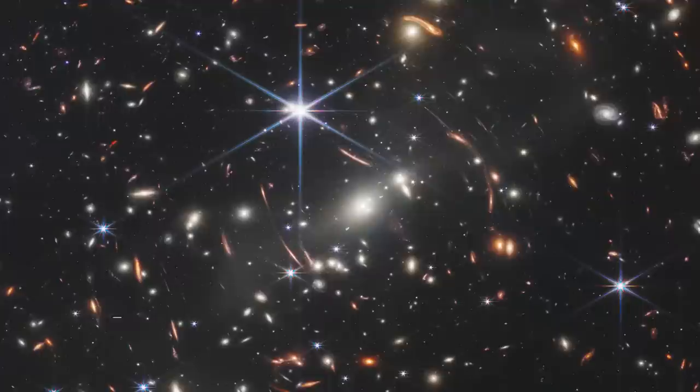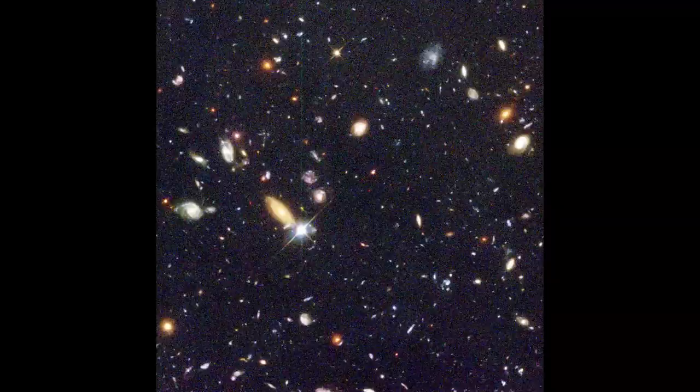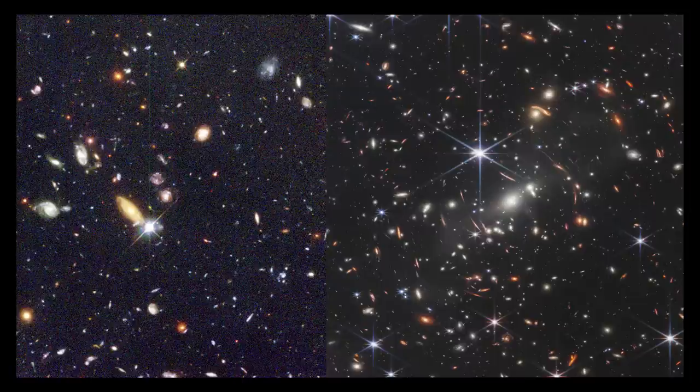The framed field, just one-twentieth the size of the moon's angular diameter, had already been photographed by Hubble in 2017, and it is precisely that image which was not made to be presented to the general public, but was just a routine image that NASA, which evidently likes to win easy, chose to set up the comparison with Webb.